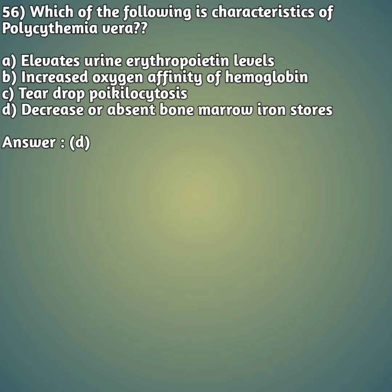The right answer is answer D - decreased or absent bone marrow iron stores is one of the characteristics of polycythemia vera.